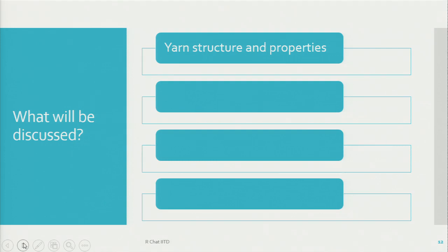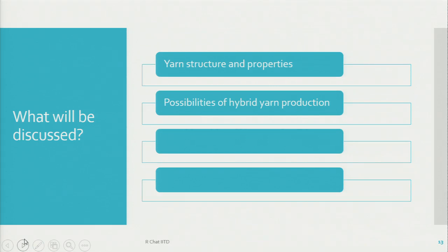We will also learn about the yarn structure and the properties of the yarn produced by these technologies. The yarn produced by these technologies is structurally different from the yarn produced on a ring spinning system, and the consequence of these structural differences gets reflected in the properties of the yarn. The next topic is the possibilities of hybrid yarn production — introducing filament and staple fibers together and spinning them together to produce composite yarns, also called hybrid yarns.